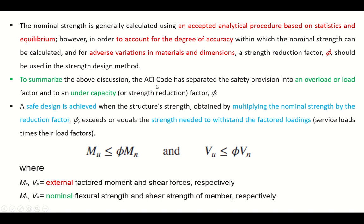To summarize the above discussion, the ACI code has separated the safety provision into an overload or load factor and an under capacity. So you are increasing the load and you are decreasing the capacity. A safe design is achieved when the structural strength obtained by multiplying the nominal strength by the reduction factor phi exceeds or equals the strength needed to withstand the factored loading. So in this equation, M U is your demand which comes from the structural analysis, and M N is your nominal flexural capacity, and phi is that reduction factor. So you are reducing your nominal strength capacity by a certain amount, and you want that this reduced capacity should be greater than or equal to your demand. And same is for the shear.